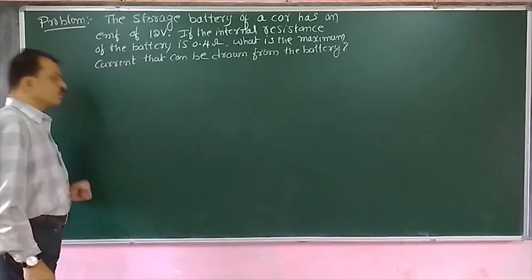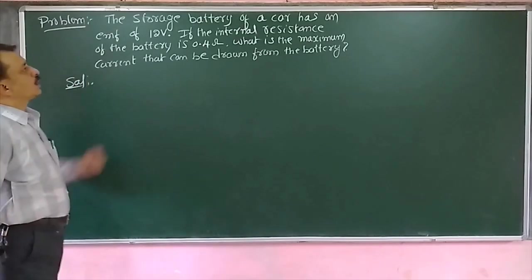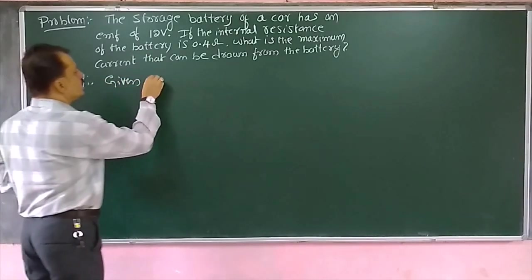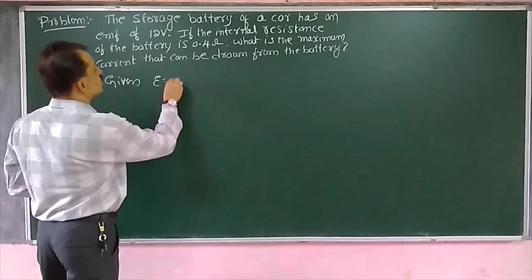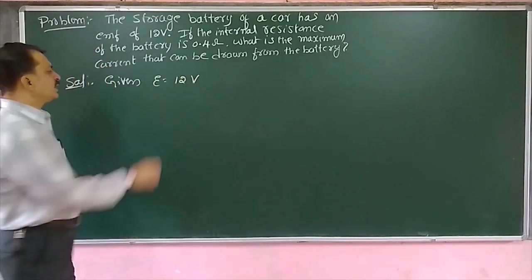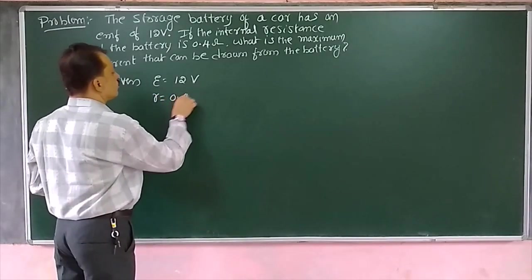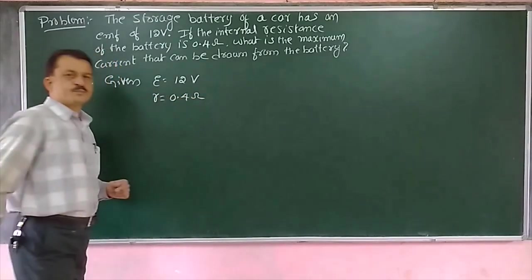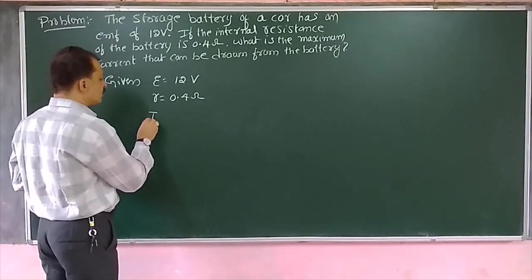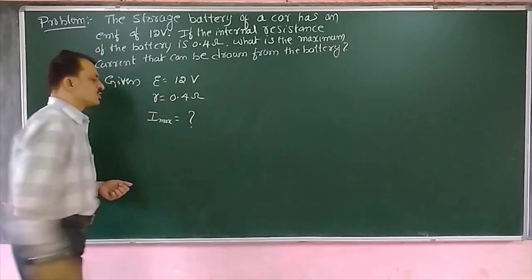Very simple problem. The car battery has an EMF equal to 12 volts and the internal resistance of the battery, small r, is equal to 0.4 ohms. We have to calculate what is the maximum current that can be drawn from the battery.